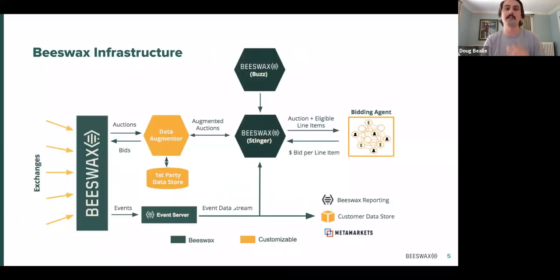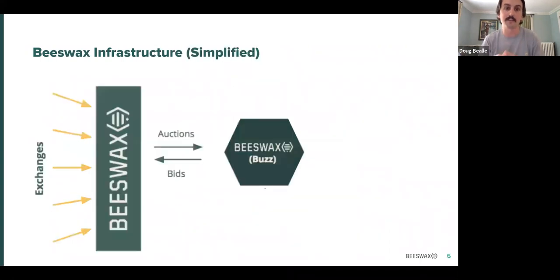So you may ask, how do we do this? This is an example, this is the Beeswax infrastructure. It's much more complicated than we need to get into today. There's a lot going on here. For our purposes, I'm going to drastically simplify this. So this is a simplified version of our infrastructure.